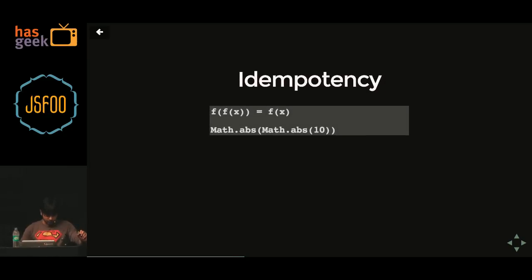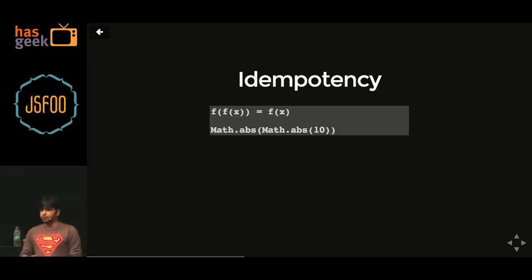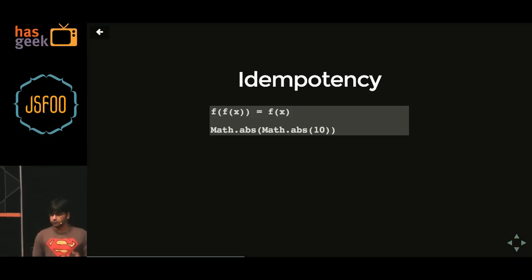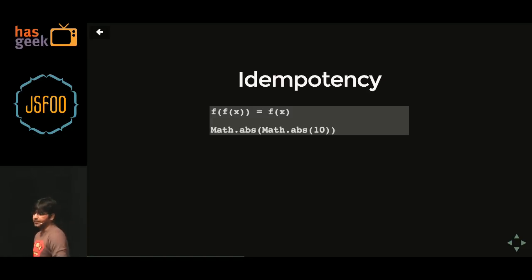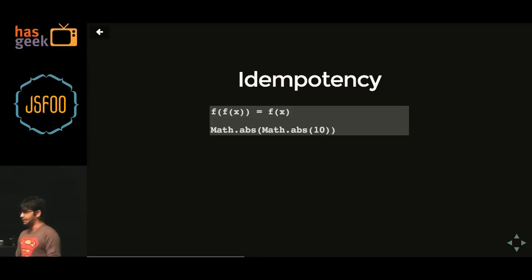Idempotency — any function where, say, sin(90) gives 1, and no matter how many times you call sin(90), you still get 1 — that is an idempotent function. I hope my bank account was like that: go to the ATM, swipe for a lakh of rupees, and every time I swipe I get one lakh no matter what. That does not really happen — so that is not an idempotent function, but sin(90) is.